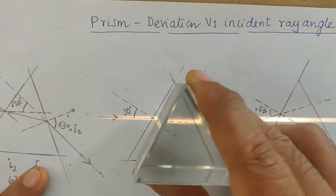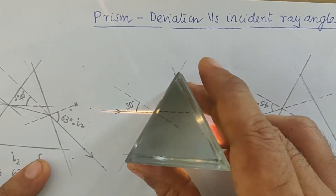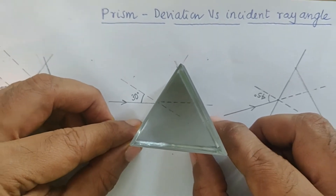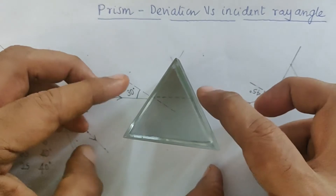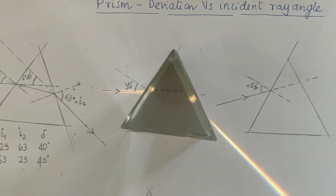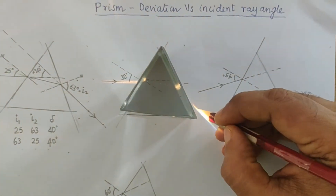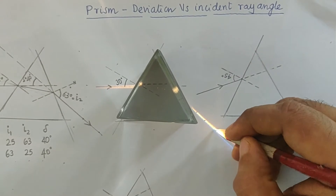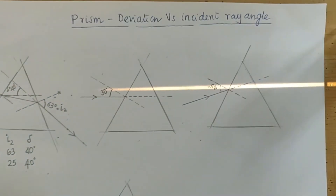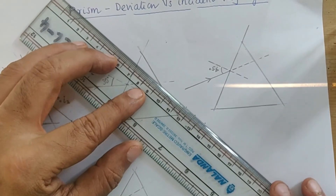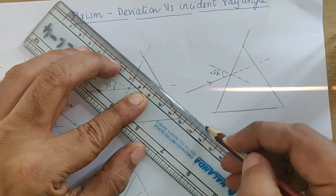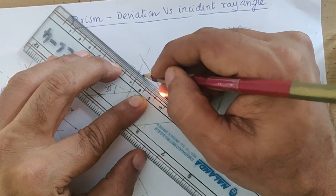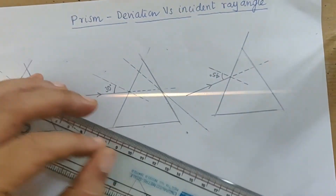Let's do this experiment for a ray at 30 degrees. I keep my prism aligned — we need to make sure all the sides are aligned, especially the two sides we're working with. The light is incoming, and for the outgoing light I'm going to mark approximately two or three points in the center where it exited. Once I have those points, I extend them back to the prism and find where they meet.